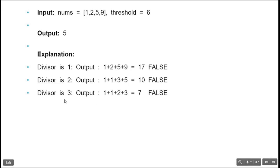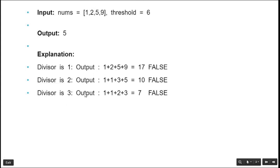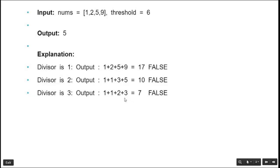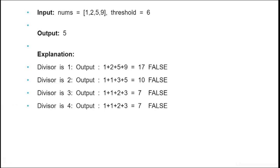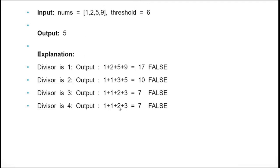With divisor 3: 1÷3=0.something rounds to 1, 2÷3=0.66 rounds to 1, 5÷3 rounds to 2, 9÷3=3 exactly. Sum is 1+1+2+3=7, which is still greater than 6. With divisor 4: 1÷4=0.25 rounds to 1, 2÷4=0.5 rounds to 1, 5÷4=1.something rounds to 2. The sum is 7 again.